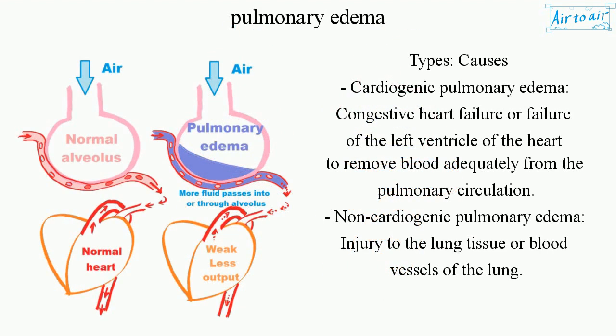Types and causes: Cardiogenic pulmonary edema results from congestive heart failure, or failure of the left ventricle of the heart to remove blood adequately from the pulmonary circulation. Non-cardiogenic pulmonary edema results from injury to the lung tissue or blood vessels of the lung.